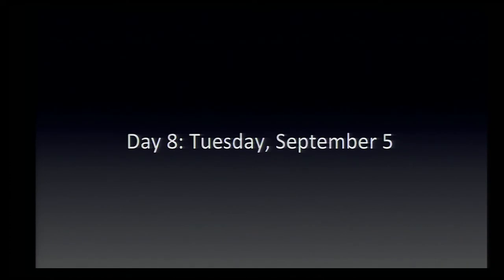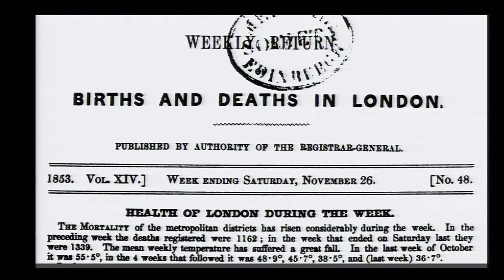On Tuesday the 5th, Snow went to the Registrar General's office. Since the 1833 epidemic, the Registrar General had issued weekly reports of births and deaths in the city, including the time, place, and cause of death. Snow asked to see the partial results for the week in progress, and he got the addresses of 83 victims.